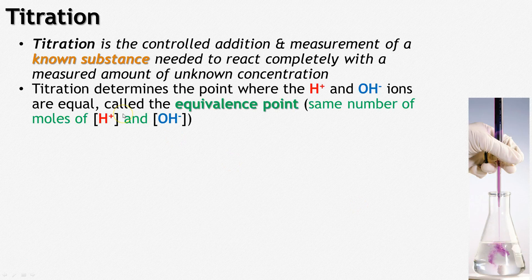Titration tells you the point where the hydroxide and the hydronium ions are going to be equal. We call this the equivalence point — where you're going to have the same number of moles of hydronium and hydroxide.